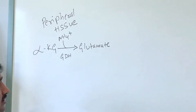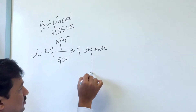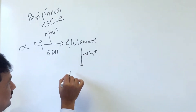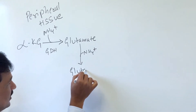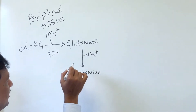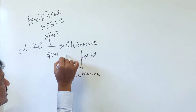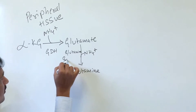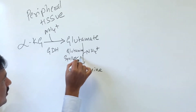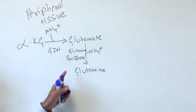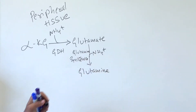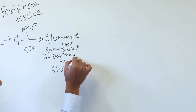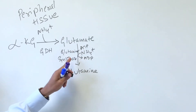Once glutamate is made, it can accept one more ammonium ion (NH4+) and becomes glutamine. This is done by glutamine synthetase enzyme, which uses ATP — ATP is converted to ADP in this reaction.